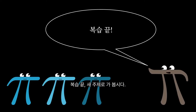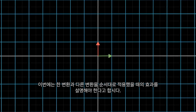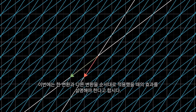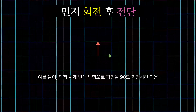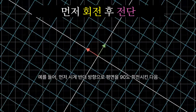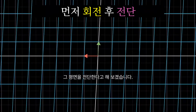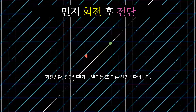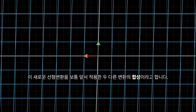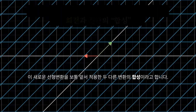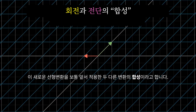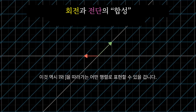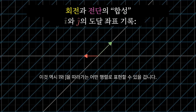Alright, recap over — on to the new stuff. Often times you find yourself wanting to describe the effects of applying one transformation and then another. For example, maybe you want to describe what happens when you first rotate the plane 90 degrees counterclockwise, then apply a shear. The overall effect, from start to finish, is another linear transformation, distinct from the rotation and the shear. This new linear transformation is commonly called the composition of the two separate transformations we applied, and like any linear transformation, it can be described with a matrix of its own by following i-hat and j-hat.